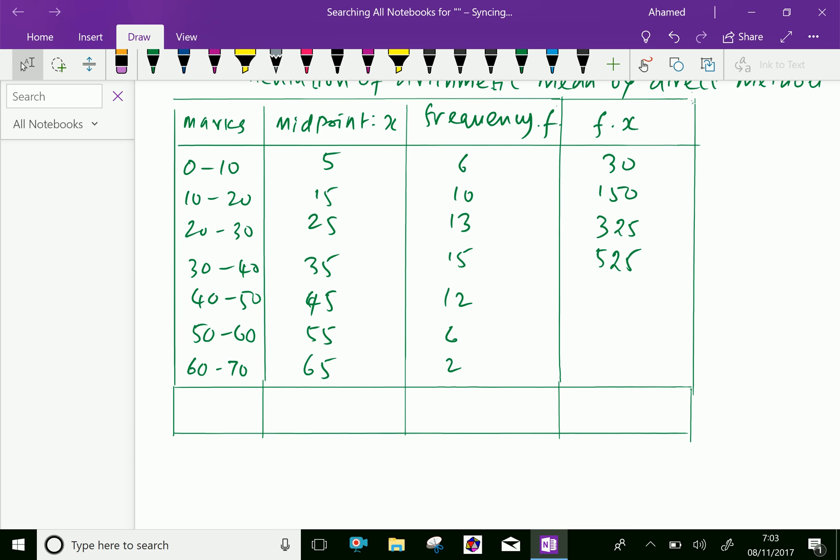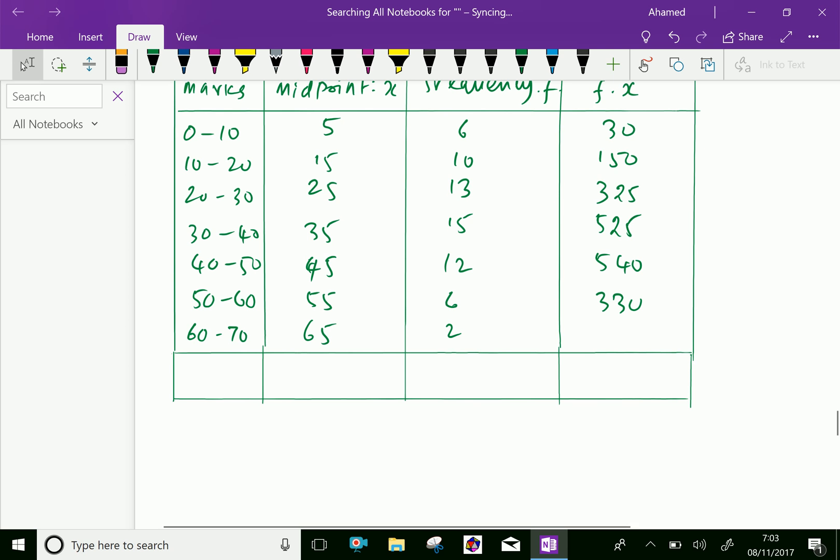45 into 12 equals 540, 55 into 6 equals 330, and 65 into 2 is 130.